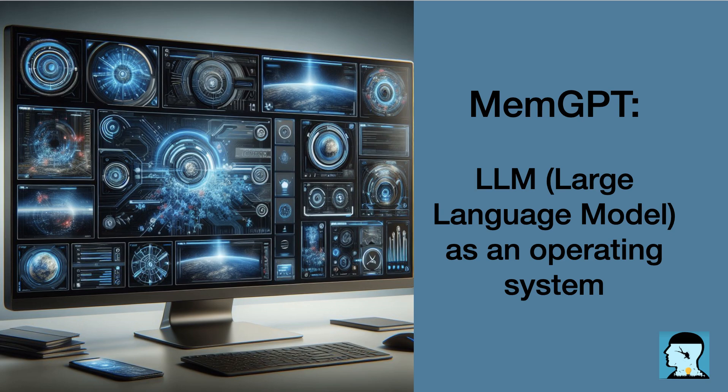Interrupts play a crucial role in allowing MEMGPT to respond to user inputs in a timely manner. For example, let's consider a chat application where a user asks MEMGPT to perform a specific task, such as searching for information on the internet. MEMGPT can use an interrupt to process the user's request, initiate a search query, retrieve the search results, and present them to the user.